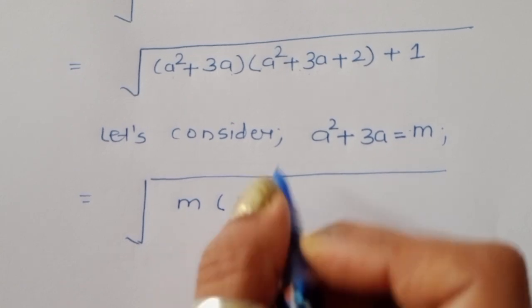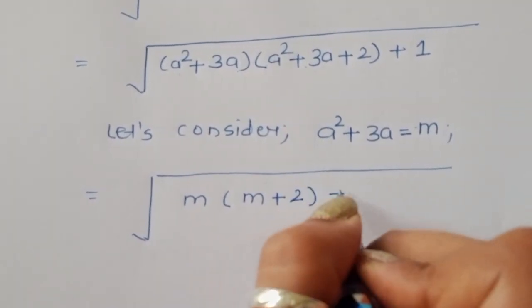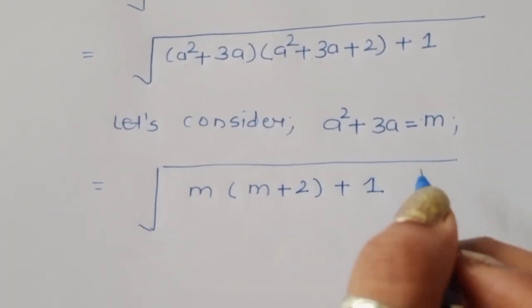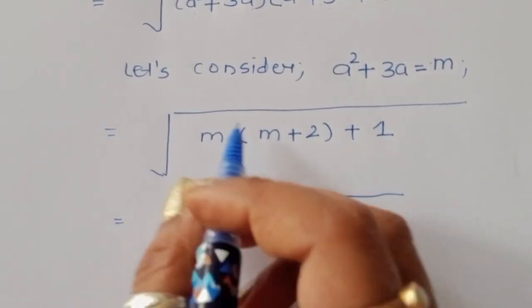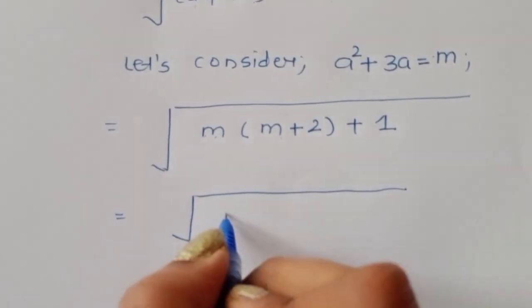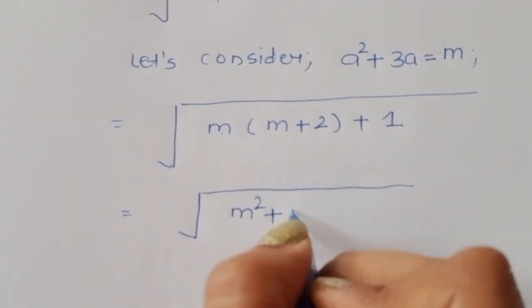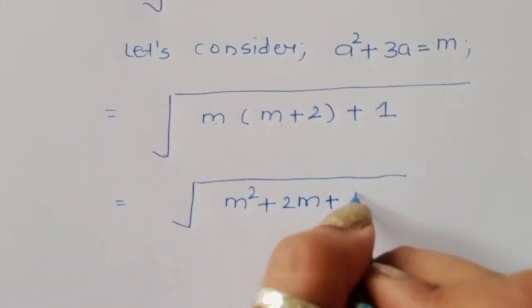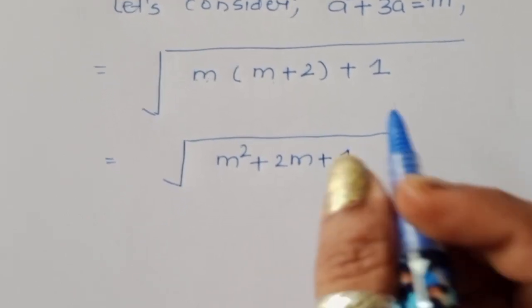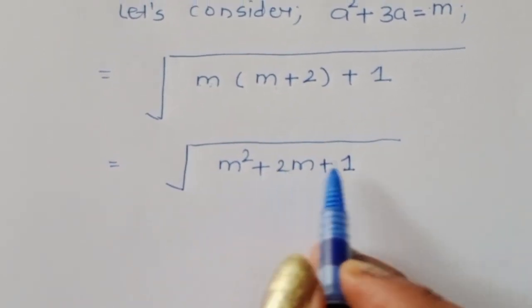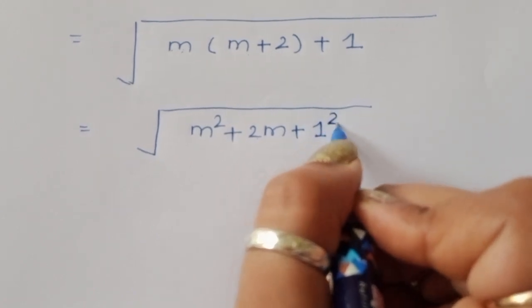So we have m times (m plus 2) plus 1, which equals m squared plus 2m plus 1.